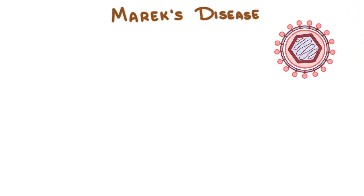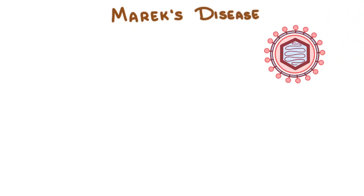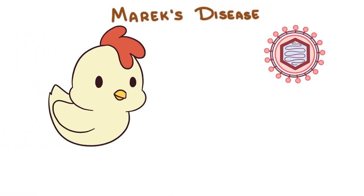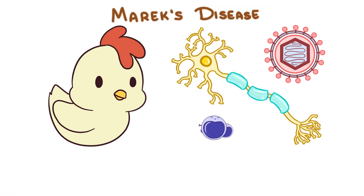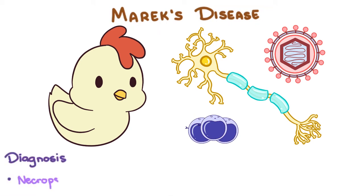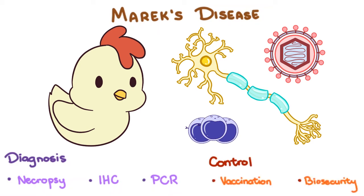To summarize: Marek's disease is caused by Gallid herpesvirus 2 of the genus Mardivirus, family Herpesviridae. It is transmitted via inhalation of contaminated feather dander. Clinical signs involve peripheral neurologic disease and lymphoproliferative disease. Diagnosis is through identification of gross lesions by necropsy, confirmed via immunohistochemistry and/or PCR. Control is achieved through vaccination and biosecurity measures.